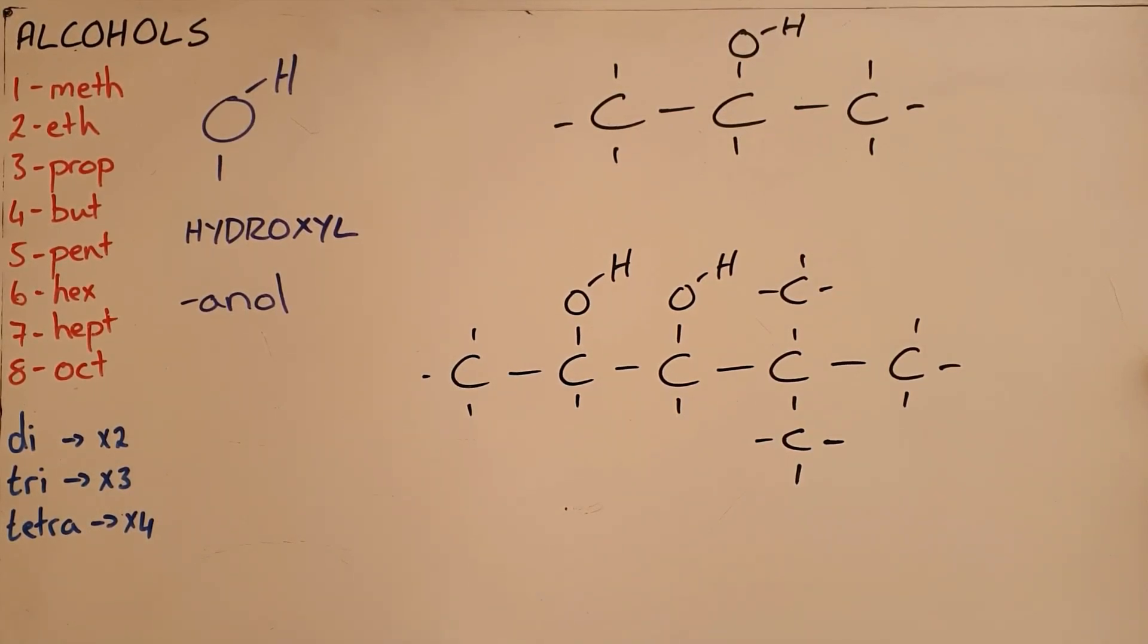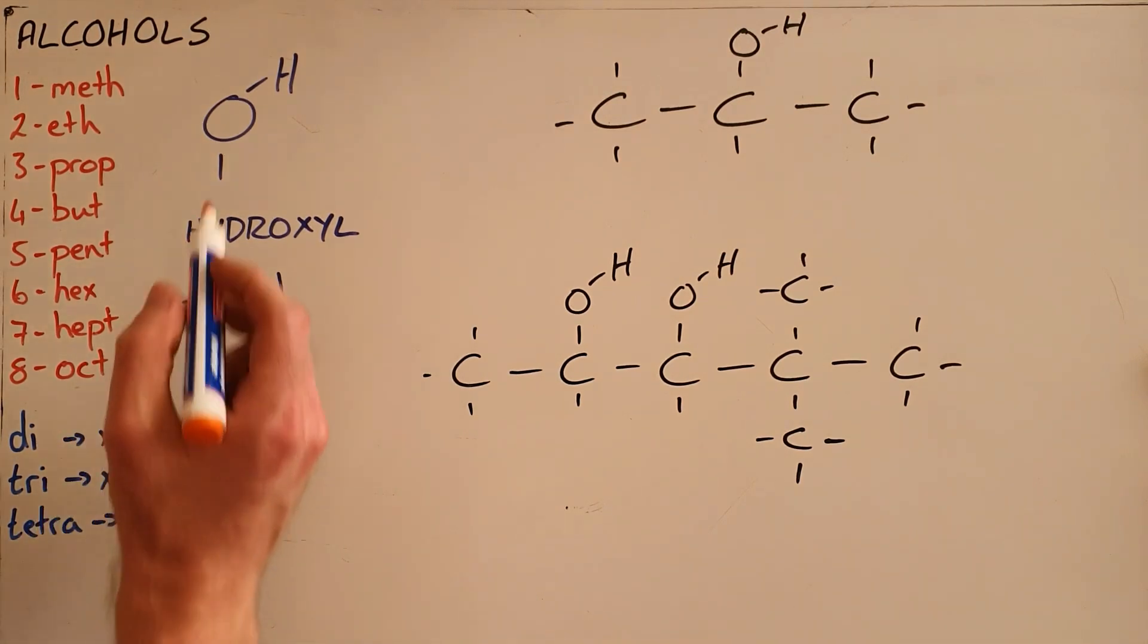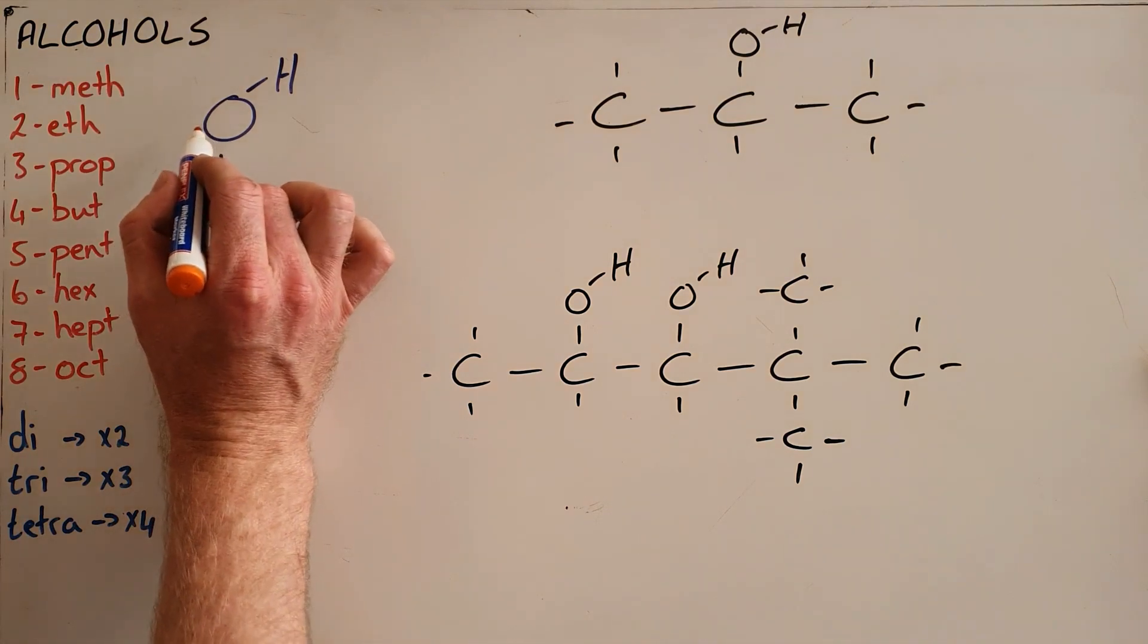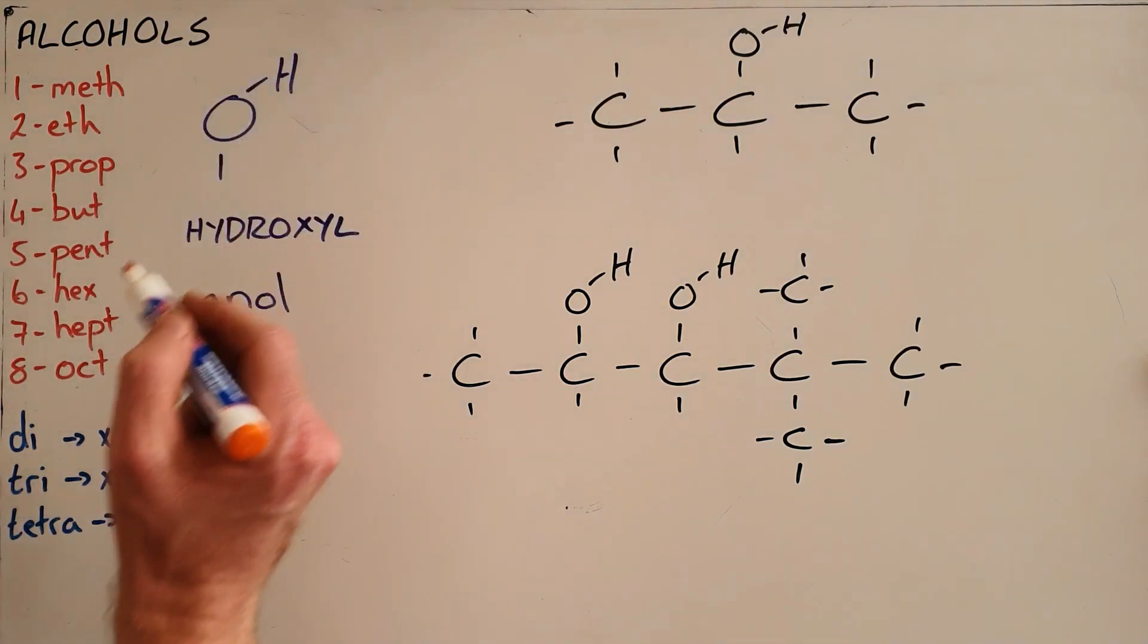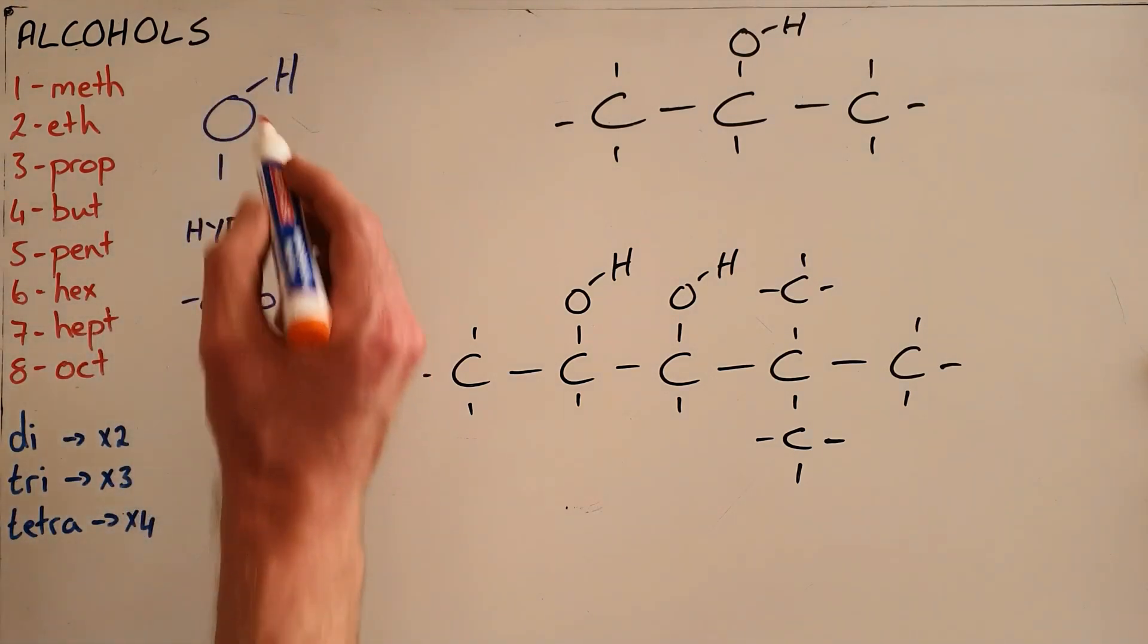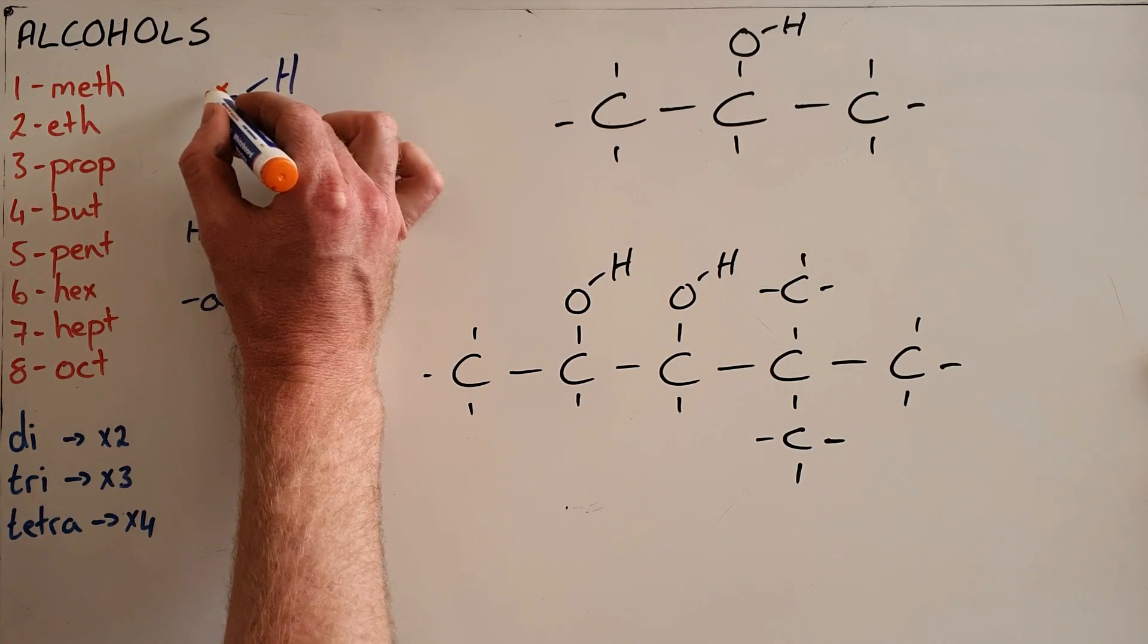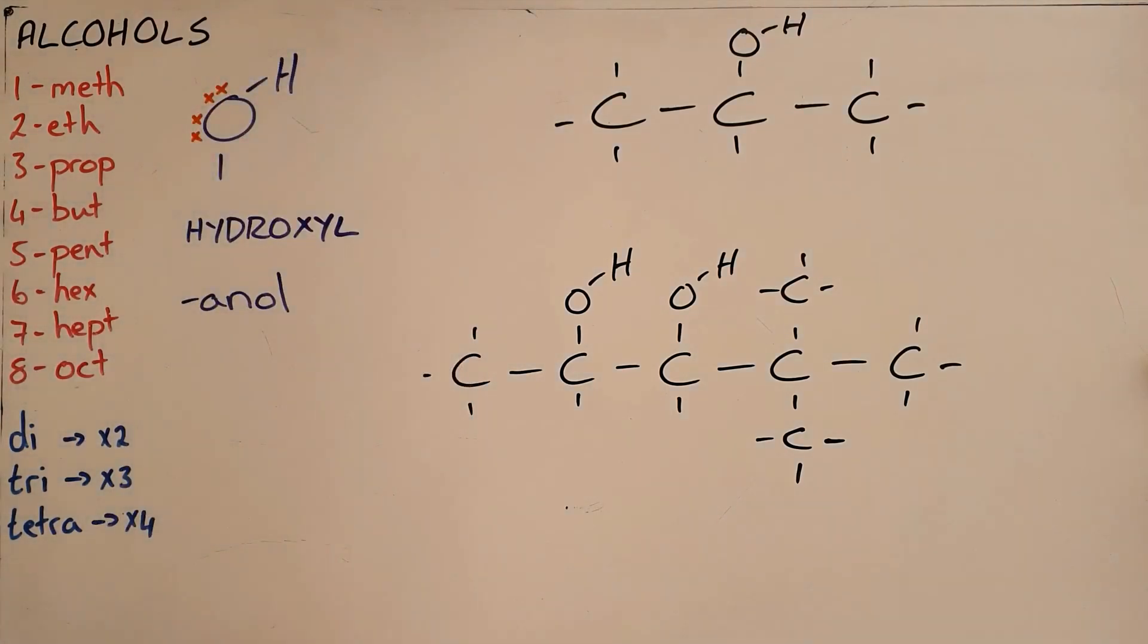Alcohols are the homologous series of molecules that contain a hydroxyl functional group. The hydroxyl functional group is a carbon that is single bonded to an oxygen, which is in turn single bonded to a hydrogen. We always draw it at this angle because the oxygen atom has two lone pairs of electrons that repel the hydrogen atom into that curved or bent configuration.